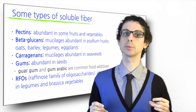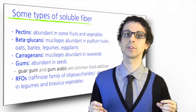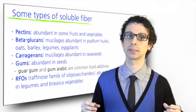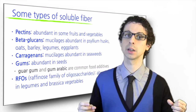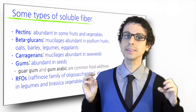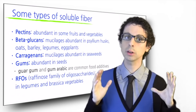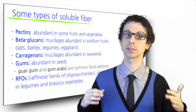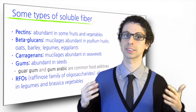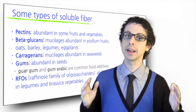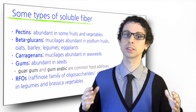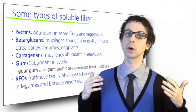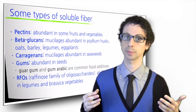Another particular group of soluble fiber are the RFOs, an acronym standing for raffinose family of oligosaccharides, such as raffinose, stachyose, and verbascose. These are a group of undigestible small chains of glucose, galactose, and fructose abundant in legumes and brassica vegetables such as cabbage or broccoli. They are very easily fermented and responsible for GI discomfort in individuals who don't regularly eat these foods.